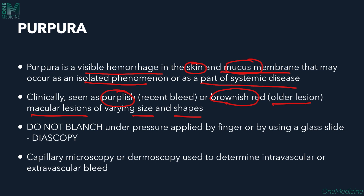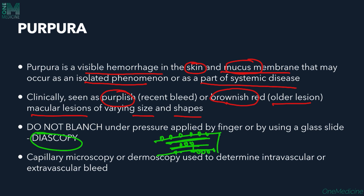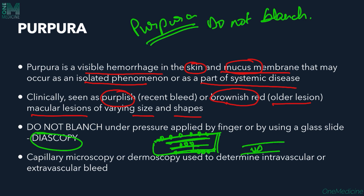Purpuric lesions do not blanch under pressure by the finger or by using a glass slide — a test called diascopy. On diascopy, these lesions won't blanch because the blood has moved out of the vessel into the extravascular space, so applying pressure won't cause blanching.